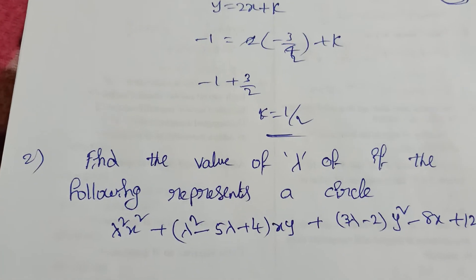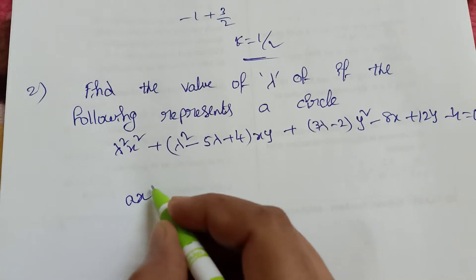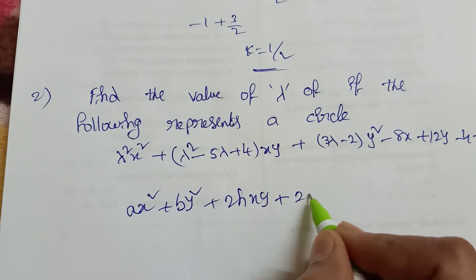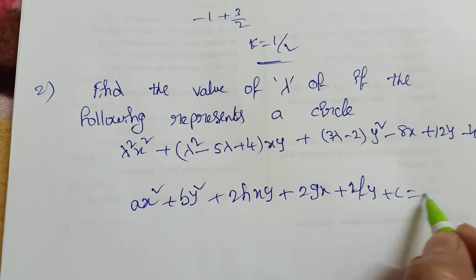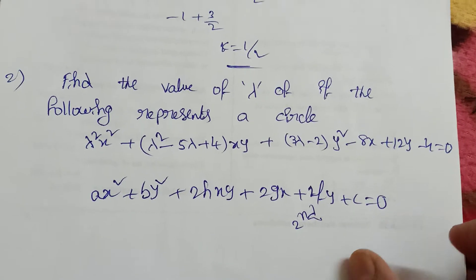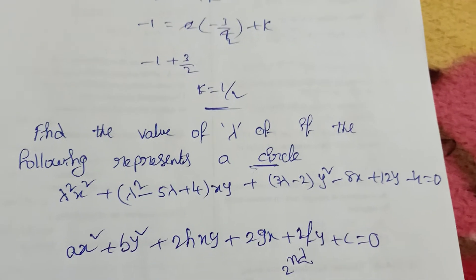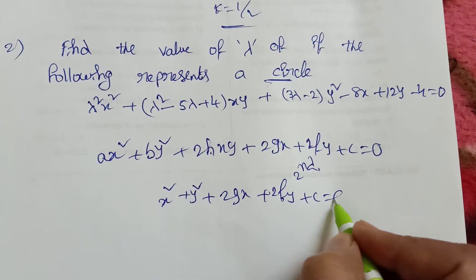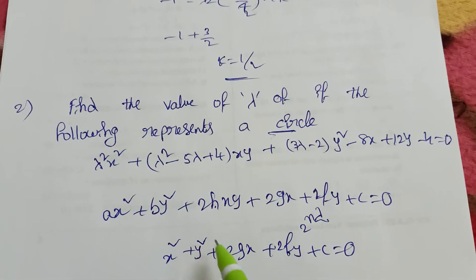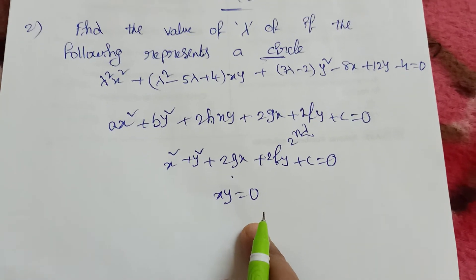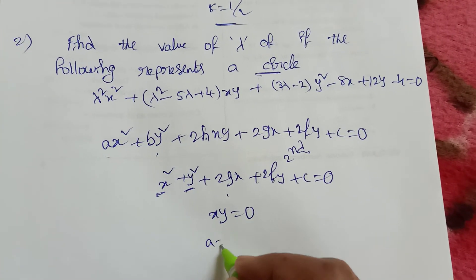The general second-degree equation is x² + y² + 2hxy + 2gx + 2fy + c = 0. For this to represent a circle, two conditions must be satisfied: first, h = 0 (no xy term), and second, a = b (coefficients of x² and y² must be equal).